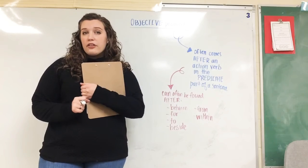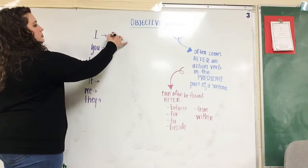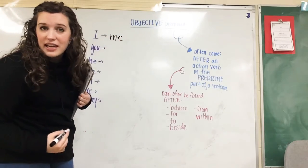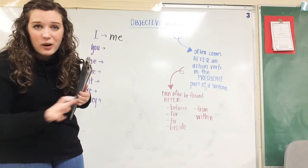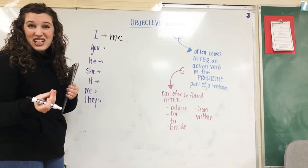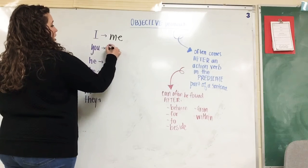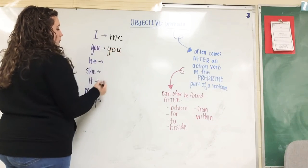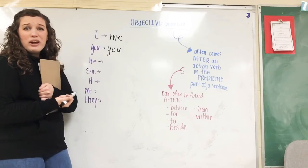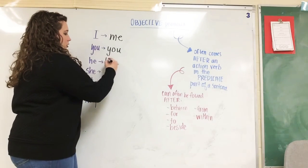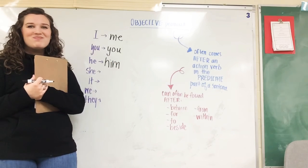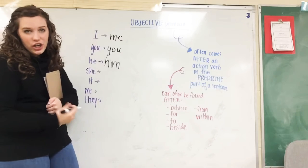So another form of I would be me. Now this one's really easy because you stays the same. You doesn't have a different form. It's always you, always, always, always. So Gus called you on the phone. Does that change anything? You know, Gus called you on the phone. Alright, what about he? Gus called he on the phone? No, Gus called him on the phone. Okay. Gus called she on the phone? Gus called her on the phone.